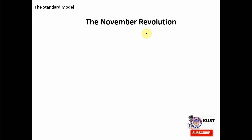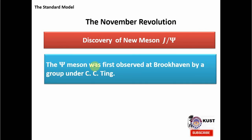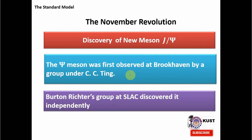The November Revolution of 1974 is because of the discovery of a new meson called J/Psi. There are two names to it — J and Psi — because this particle was discovered at Brookhaven by a group working under C.C. Ting in August 1974. For some reasons they did not publish it and kept it hidden, until another group — Burton Richter's group at SLAC — discovered it independently and called it Psi. We then gave it two names, J/Psi, to acknowledge the findings from Ting's and Richter's groups independently.